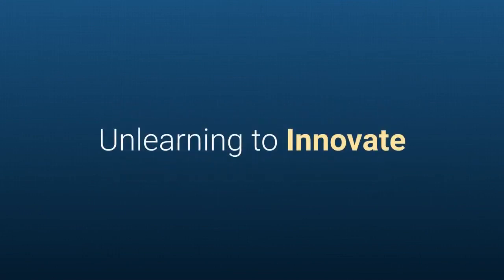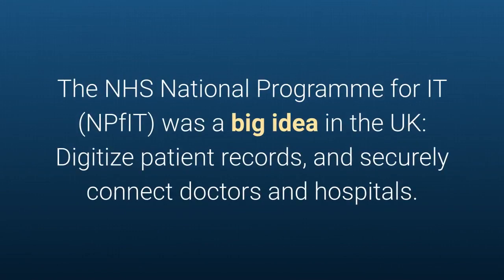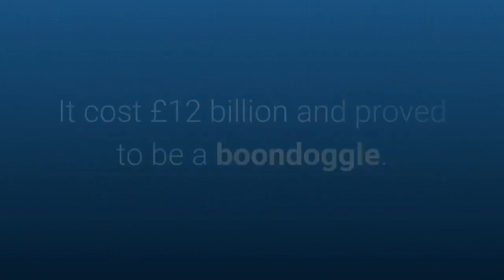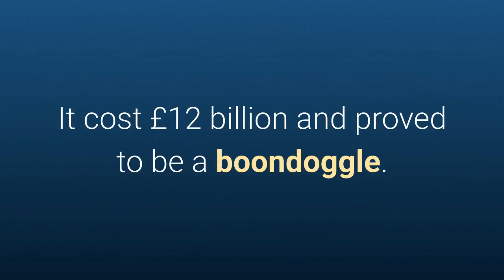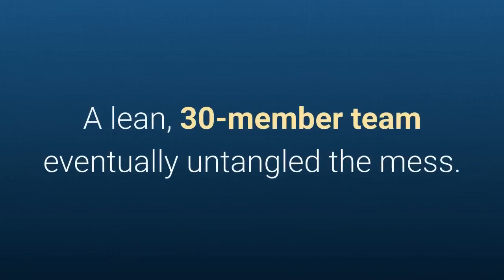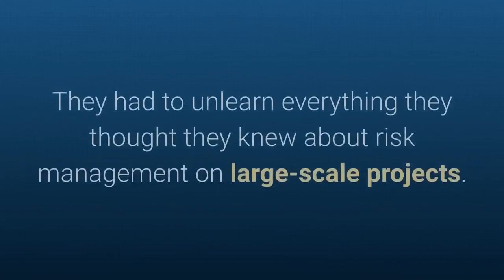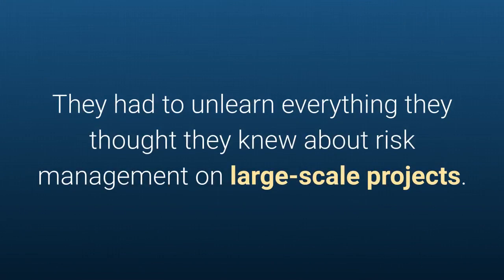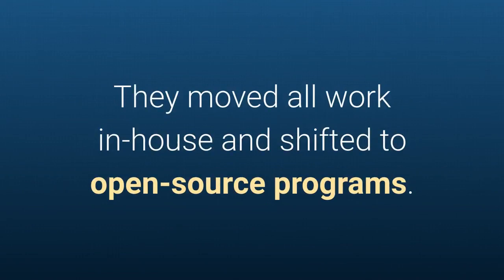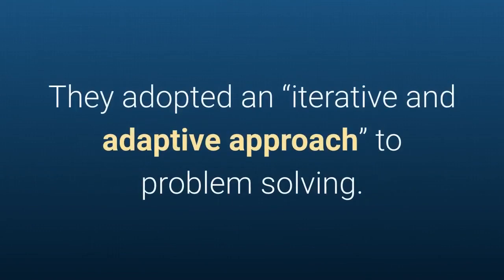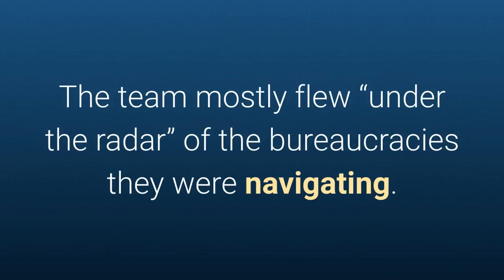The NHS National Programme for IT (NPfIT) was a big idea in the UK: digitize patient records and securely connect doctors and hospitals. It cost 12 billion pounds and proved to be a boondoggle. A lean 30-member team eventually untangled the mess. They had to unlearn everything they thought they knew about risk management on large-scale projects, moved all work in-house, shifted to open-source programs, and adopted an iterative and adaptive approach to problem solving.